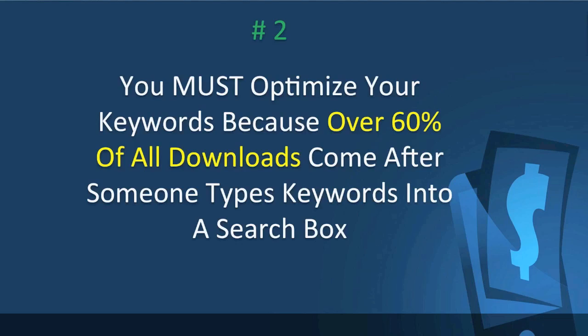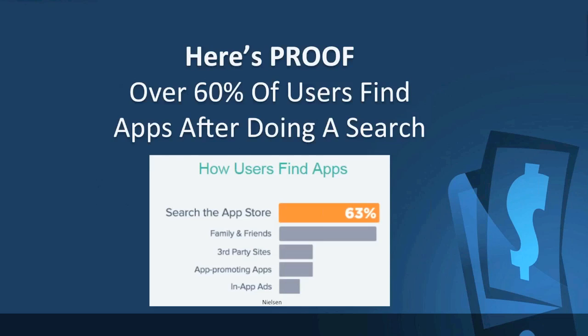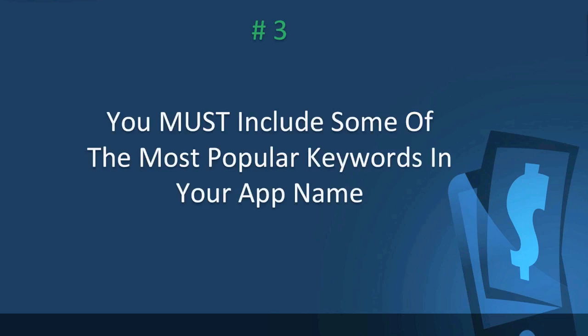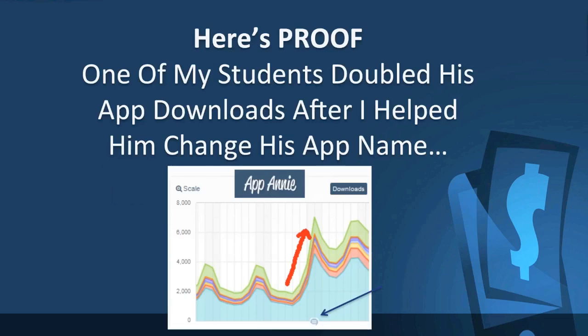Number two: you must optimize your keywords. Over 60% of all downloads come after somebody types keywords into a search box. You should use popular websites to research competitors' keywords — my favorite is Sensor Tower, but there's also AppCode.es and Searchman. Number three: you must include some of the most popular keywords in your app name. You might want to use a hyphen or dash to separate your app name — something like 'My App Name - keyword keyword keyword.' Putting keywords in your app name is extremely important. Here's proof: one of my students doubled his app downloads after I helped him change his app name — from around 3,000 to over 6,000 downloads a day.